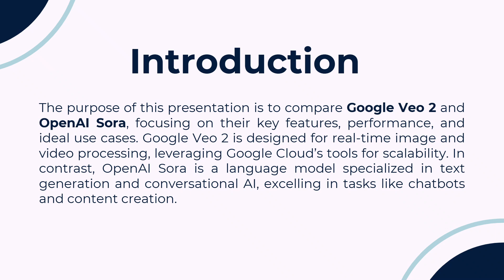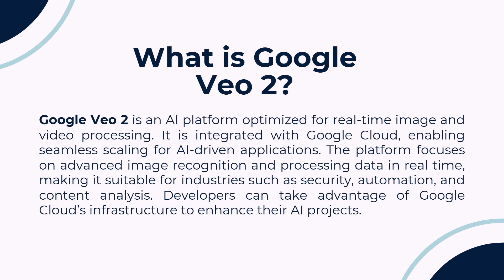Excelling in conversational AI, we will break down each platform's core features and help you determine which one suits your needs best. Google VO2 is an AI platform built for real-time image and video processing. It integrates with Google Cloud, providing scalability and cloud-based computing power.